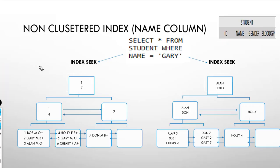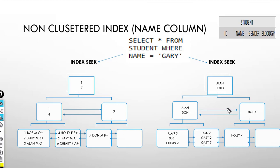In this example I have a non-clustered index and a clustered index, and I am searching the details from the student table where name equals Gary. So Gary will be searched — first it will go to the left-hand side, then the right-hand side, and here you will find two Garys. This is the non-clustered index seek operation. You will get two Garys: one Gary having ID two and one Gary having ID five.